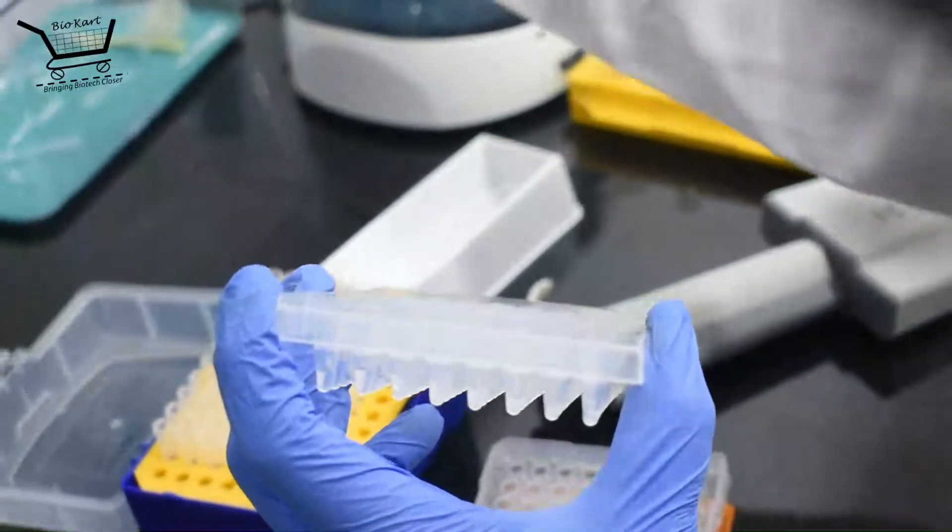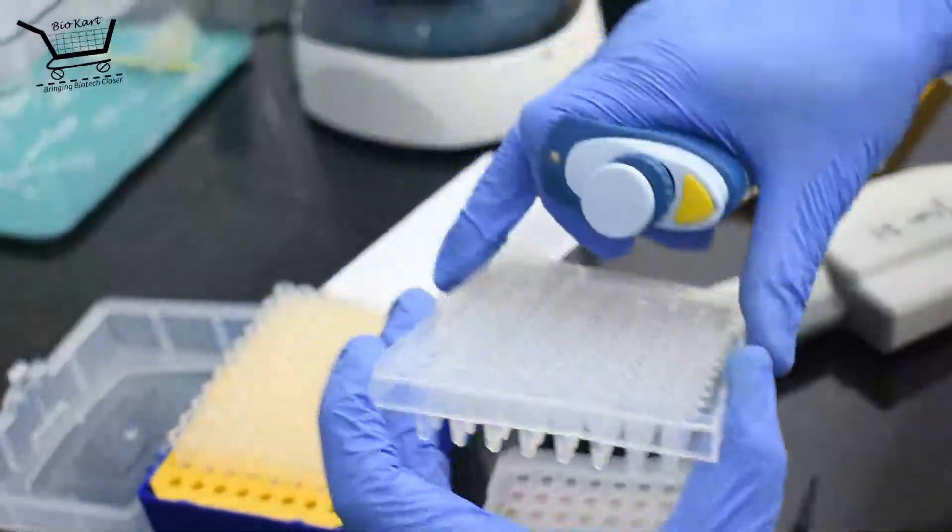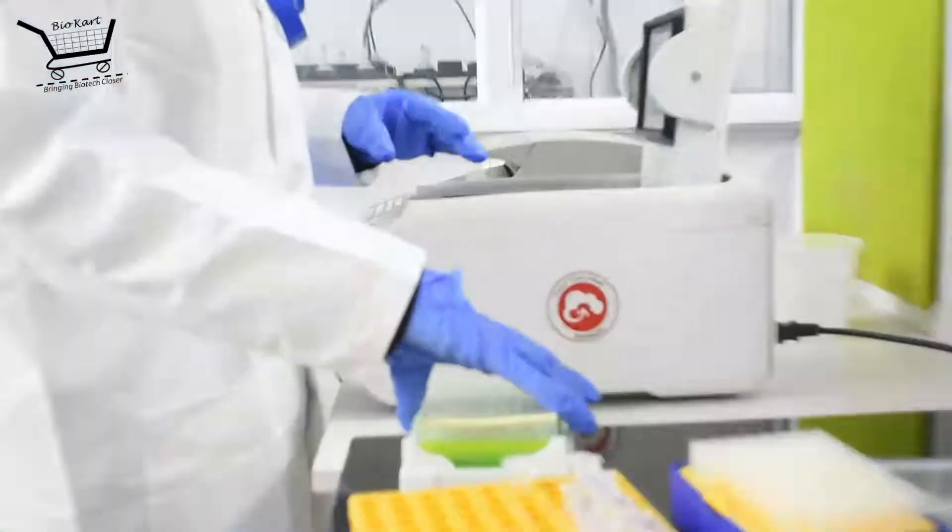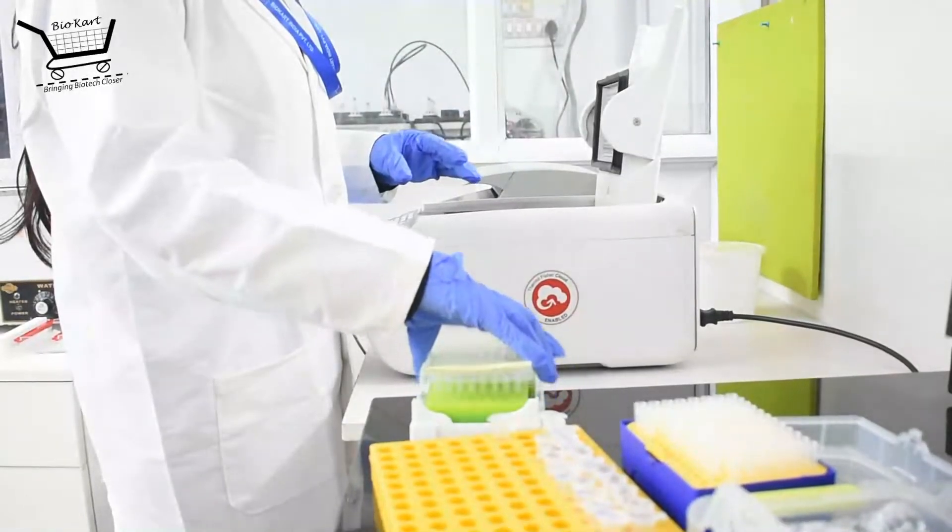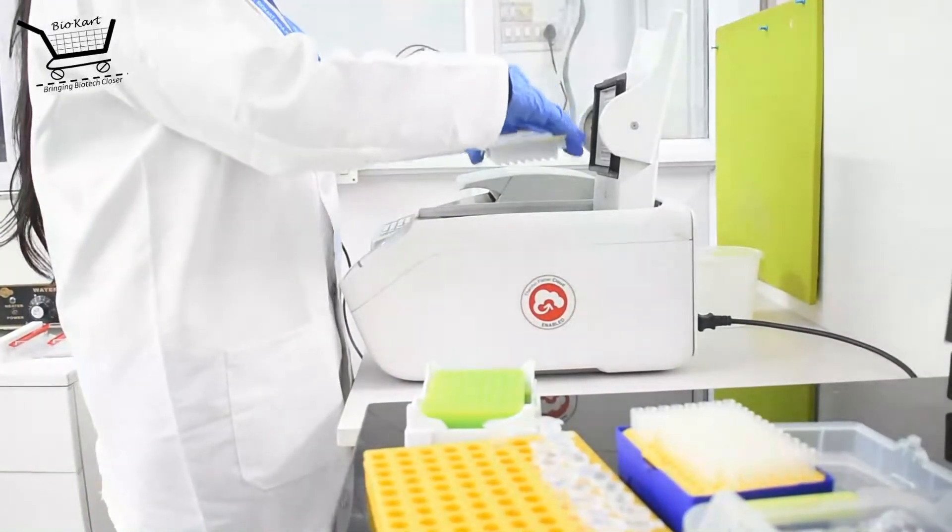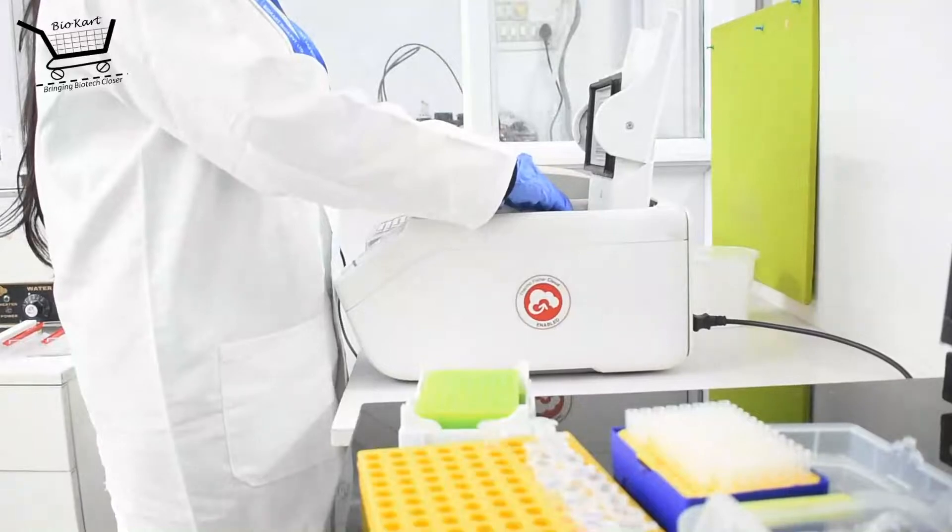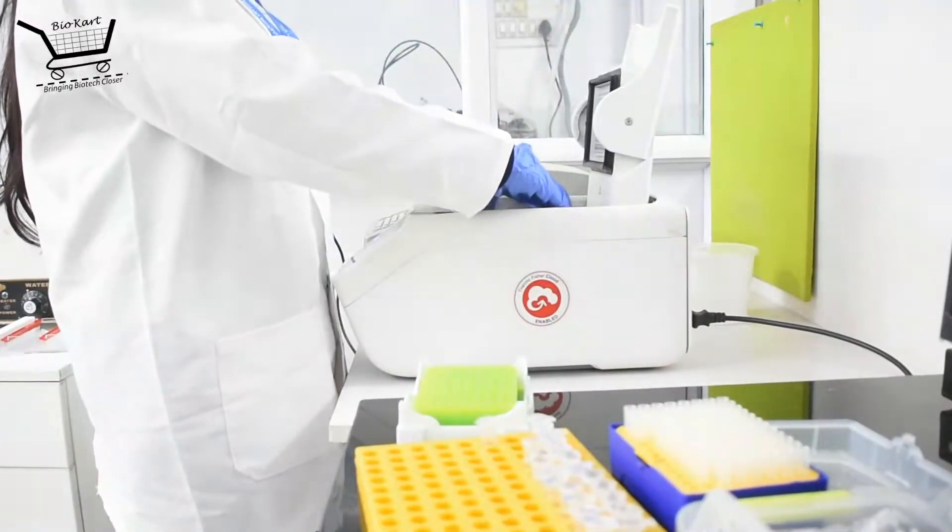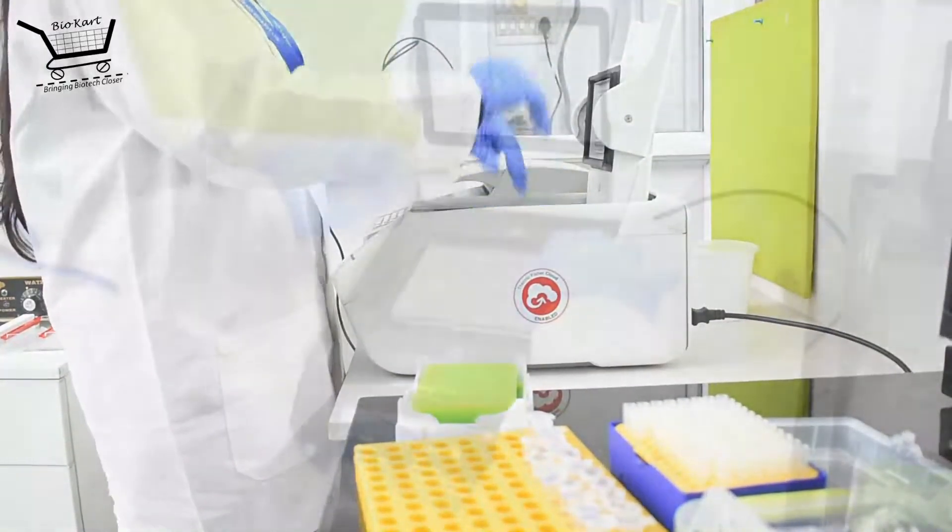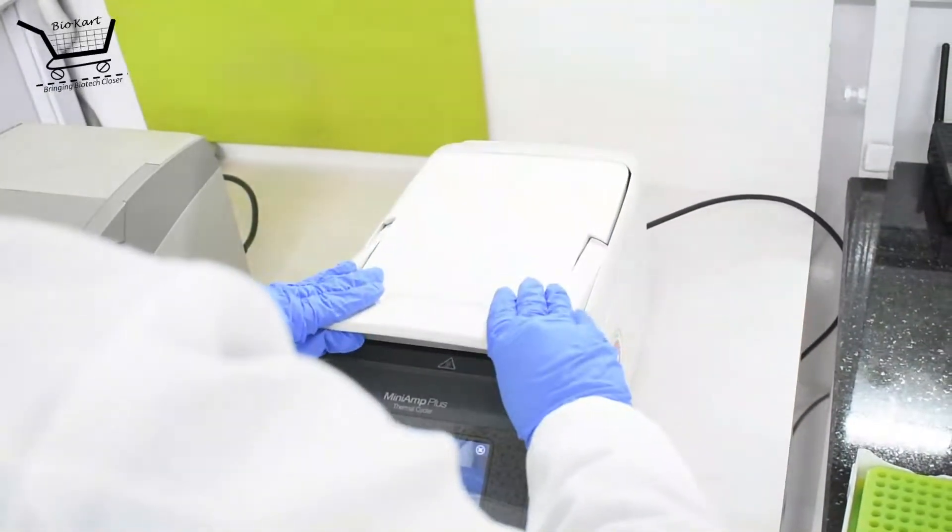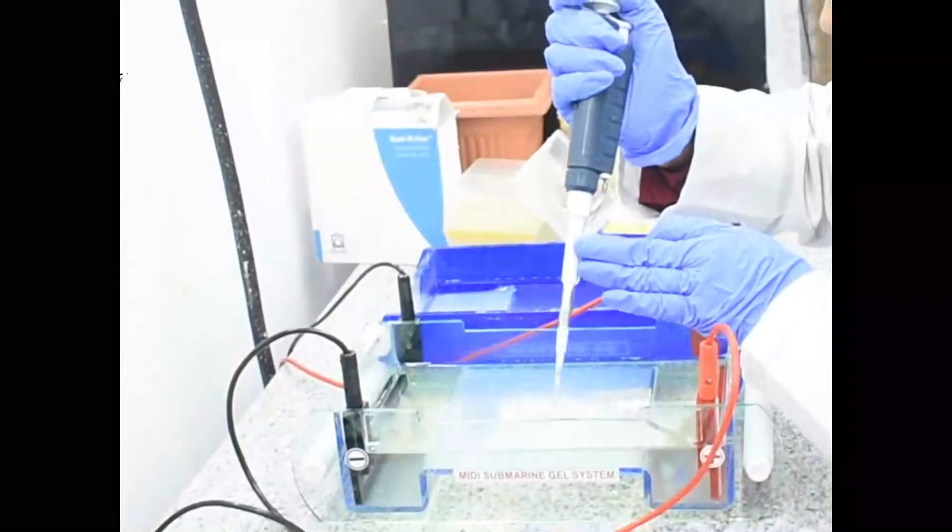Barcoding PCR is the process of incorporation of 8 unique base pair indices to the enriched amplicons. Once the barcoding PCR is completed, another round of QC is done similar to the one performed after the first PCR amplification.